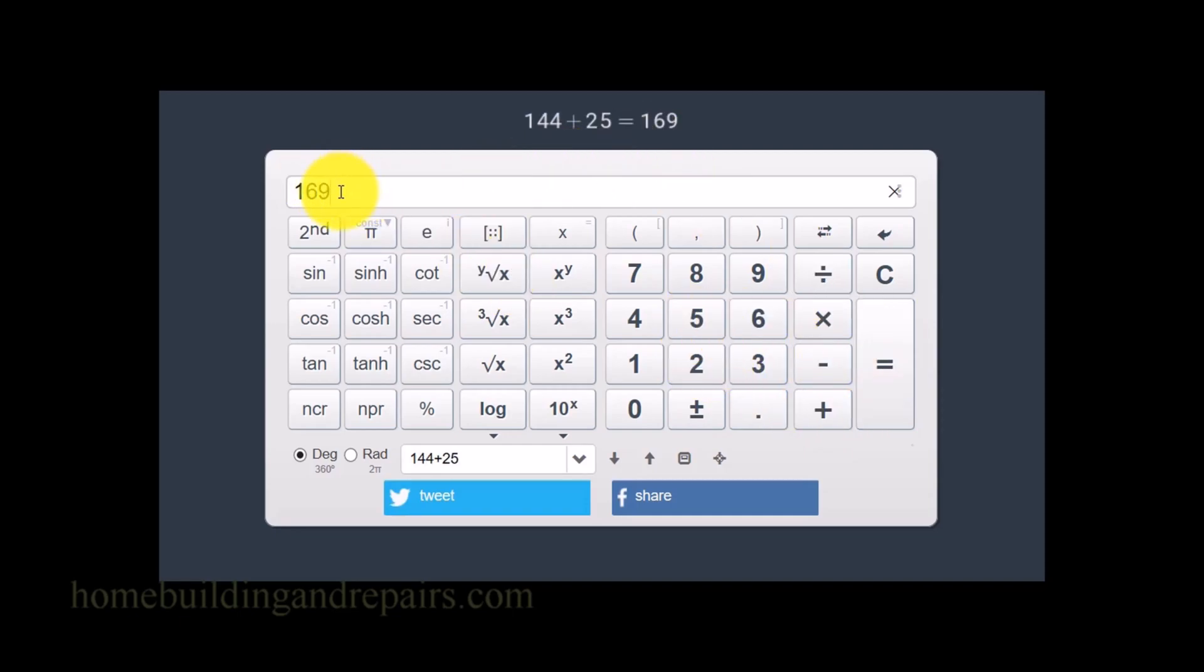Now to find the square root of 169, all we need to do is push the symbol that is going to represent the square root of the number that we had when we added the side A squared and side B squared together. So the square root is just simply the reverse of squaring a number. So if we were to multiply 13 times 13, we're going to get 169. So I hope that makes sense. You're just reversing the process by using the square root symbol.